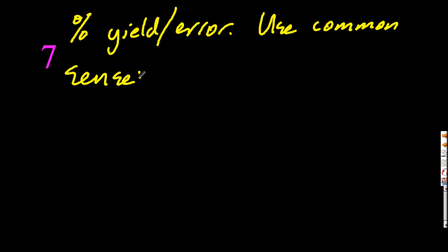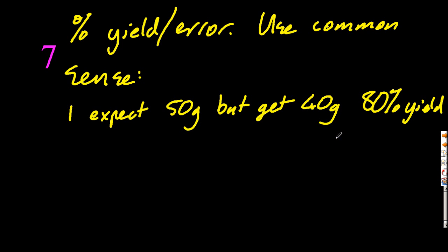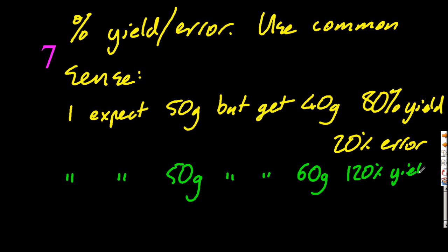For seven, I see people do percent yield wrong all the time. So don't think about it in terms of the equation that we give you. Just use your common sense. So let's say I wanted to make 50 grams of something and I made 40. So that's an 80% yield and a 20% error. And if I wanted to make 50 and I made 60 grams, it's 120% yield and a 20% error. Don't worry about the formulas and the equations. It's just confusing.